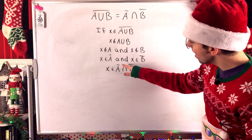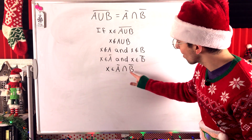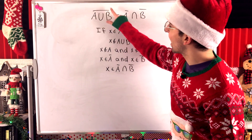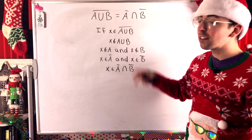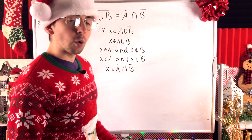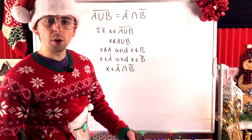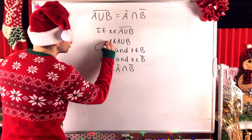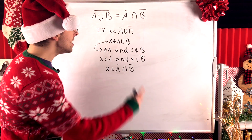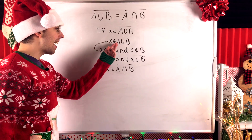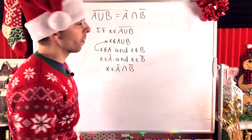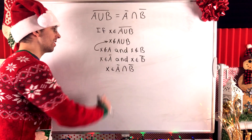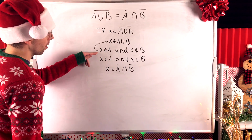So if we take any element from A complement intersect B complement, it will also be an element of the complement of A union B. These two sets are subsets of each other, so by definition of set equality, they are equal. The only step that was mildly tricky is going from 'x is not in A union B' to 'x is not in A and not in B.' Remember: to be in A union B, x has to be in A or B or both. If x isn't in A and isn't in B, then it's not in the union.